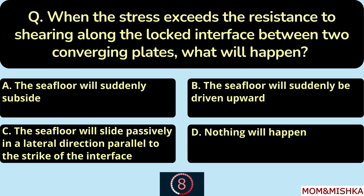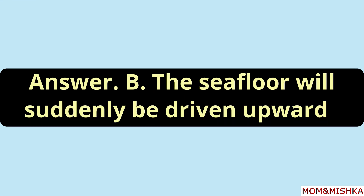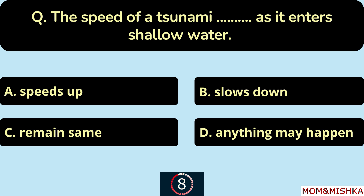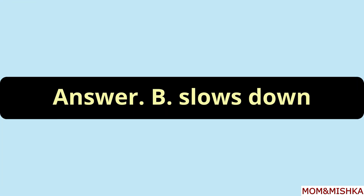When the stress exceeds the resistance to shearing along the locked interface between two converging plates, the sea floor will suddenly be driven upward — option B. The speed of a tsunami slows down as it enters shallow water — option B.